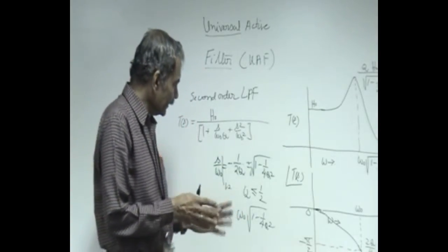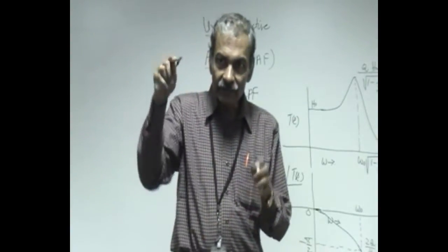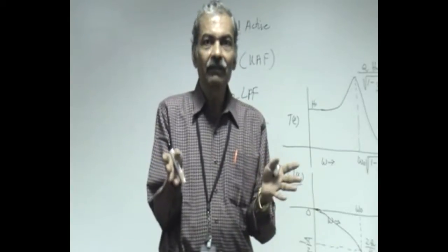The pair has complex conjugate roots whereas Q less than half it is on the negative real axis. It is over damped, it is exponential and the ringing frequency is given by this. When Q is very high it is almost equal to the natural frequency of the system. So it starts ringing very near to the natural frequency when Q is very high and the number of such rings which are visible will be equal to the value of Q.